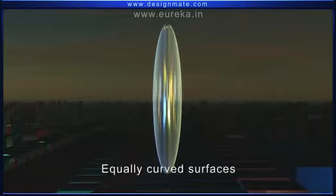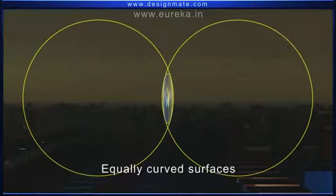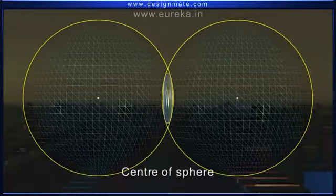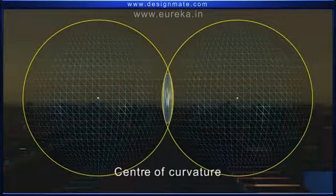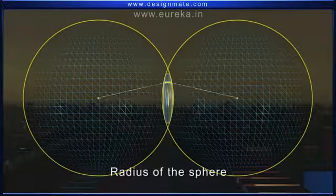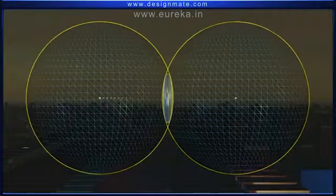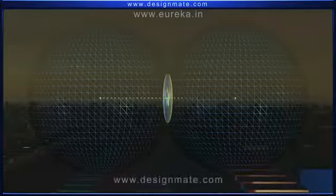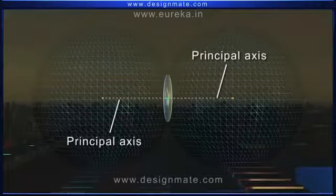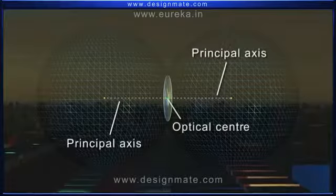We can consider the equally curved surfaces of the lens to be small parts of spheres. The center of these spheres is called the center of curvature of the lens. The radius of the spheres is known as the radius of curvature. The line joining the centers of curvature on both sides of the lens is known as the principal axis, which passes through the optical center of the lens.